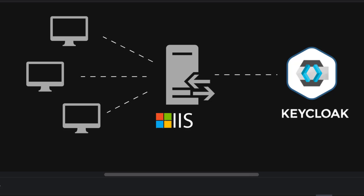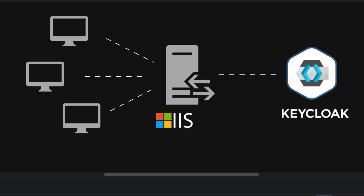We generally use a reverse proxy to delegate common tasks like static content, SSL termination, security hardening of the server headers, and a lot more. Most people want to host Keycloak behind a reverse proxy like Apache or IIS, and in this video we're going to cover how to set up Keycloak to run behind an IIS reverse proxy.